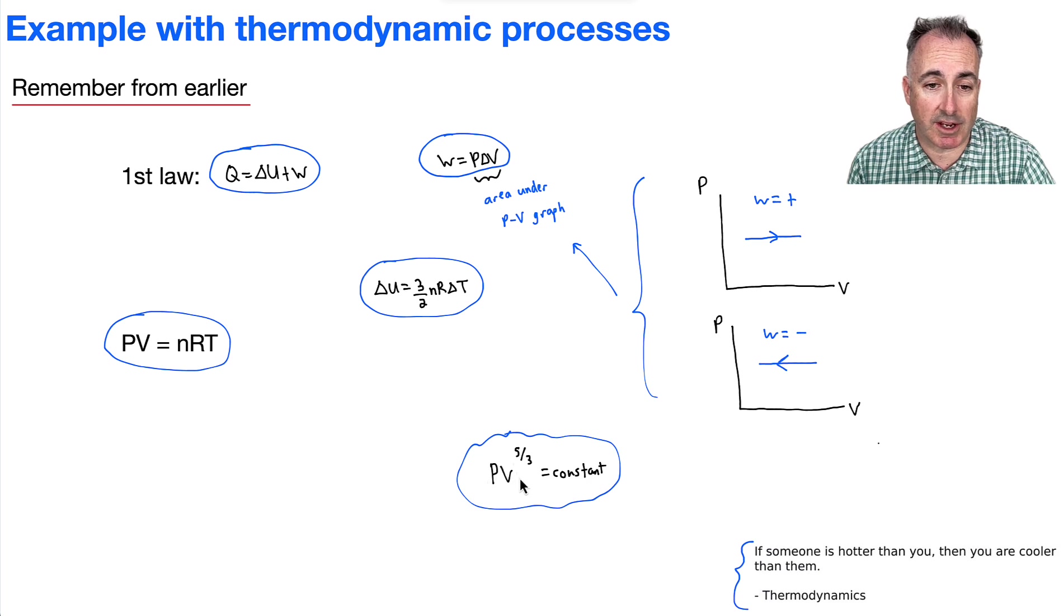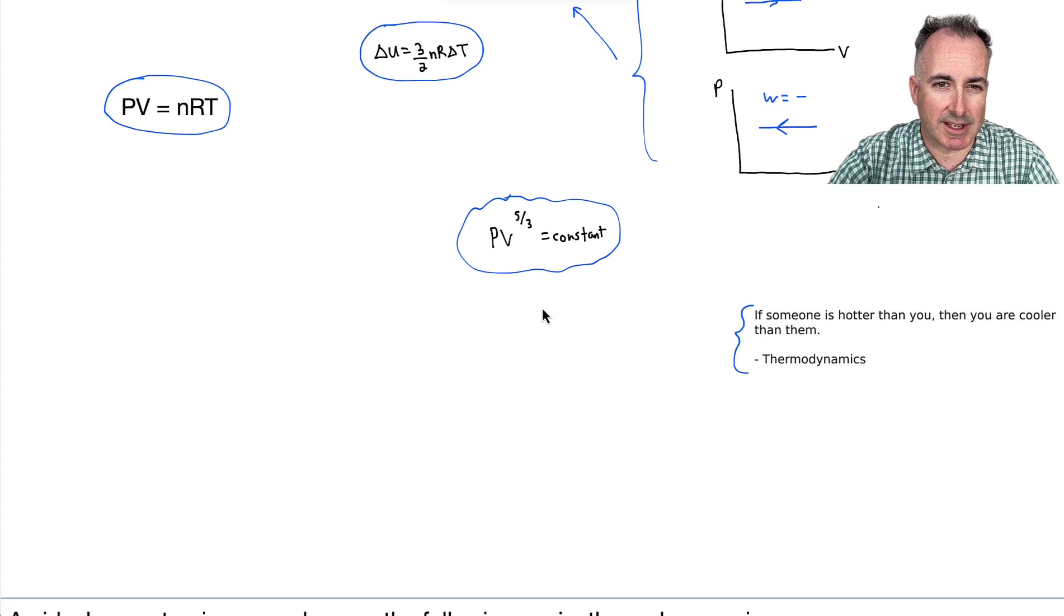And by the way, it's not P times V and all that to the 5 thirds. It's P by itself times V to the 5 thirds. That's constant. That means that PA times VA to the 5 thirds is equal to PB times VB to the 5 thirds and so on. All right, now let's do this example.